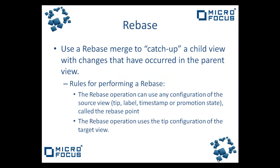Let's take a look at our first option: rebase. To use rebase merge is to catch up a child view with the changes that have occurred in the parent view. The rebase operation can use any configuration of the source view — this can be the tip, the label, the timestamp, or the promotion state, which is called the rebase point. The rebase operation uses the tip configuration of the target view.